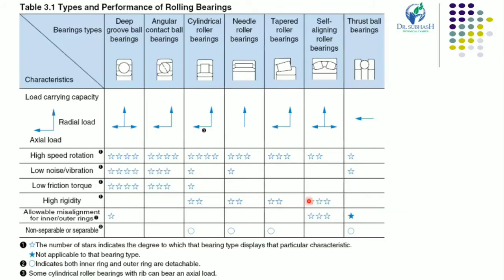Now, types and performance of rolling bearings. From this table you can understand the types of bearing and their performance at various applications. The different bearing types shown are: deep groove ball bearing, angular contact ball bearing, cylindrical roller bearing, needle roller bearing, taper roller bearing, self-aligning roller bearing, and thrust ball bearing.